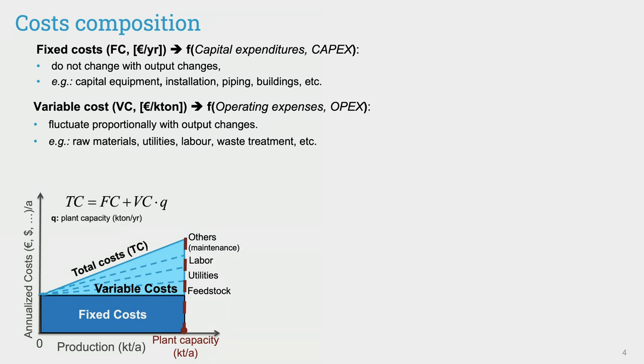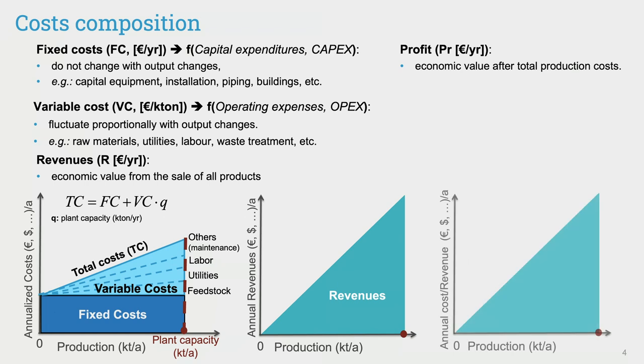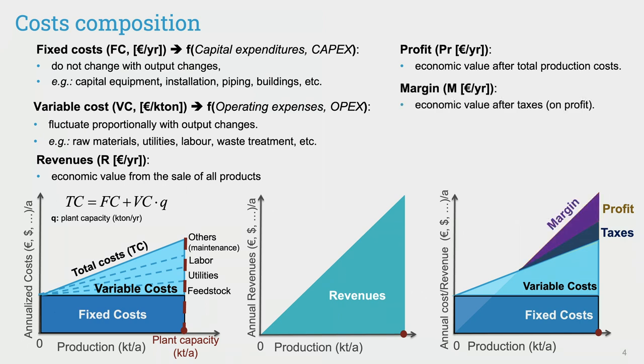And combined, they make up the total production cost. Revenues refer to the monetary value obtained from the sale of products, and profit is the difference between revenues and the total production cost. Taxes are applicable on profits, and the remaining part is the margin. Please notice that for low production levels, profits could be negative, meaning losses, since the revenues are insufficient to cover production cost.